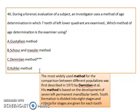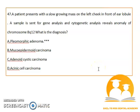During forensic evaluation of a subject, an investigator uses a method of age determination in which seven teeth of the left lower quadrant are examined. This method is the Demirjian method, described by Demirjian in 1973. It is based on the development of seven left permanent mandibular teeth and has eight stages.